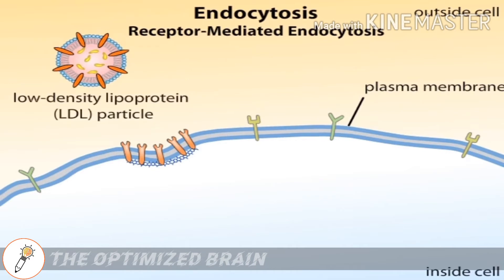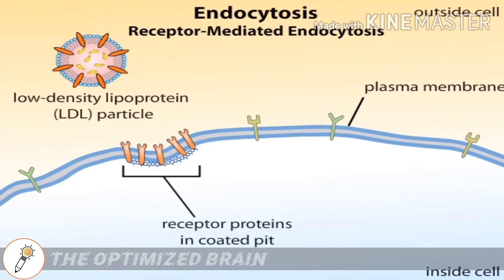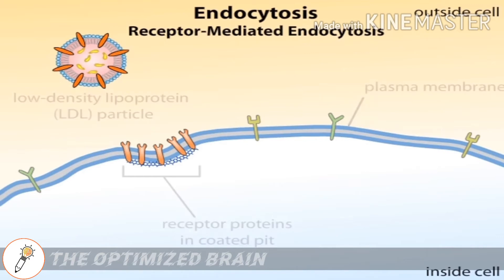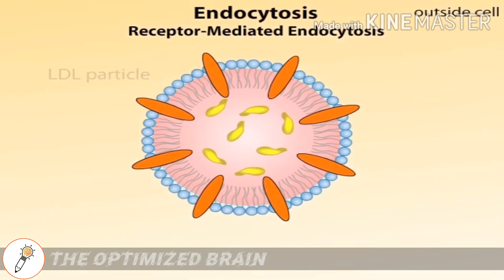The cell uses receptors that specifically recognize and bind to the LDL particle. The receptors are clustered together in a reinforced membrane structure called a coated pit. An LDL particle contains 1,000 or more cholesterol molecules at its core.